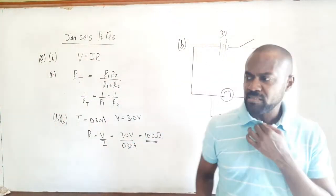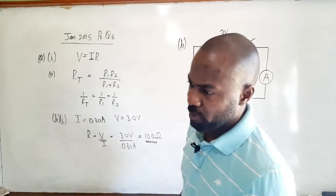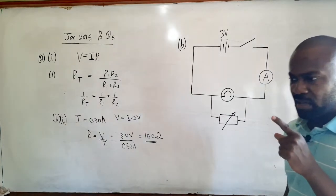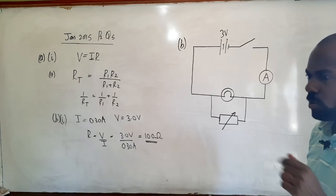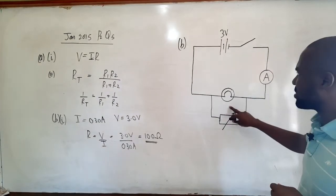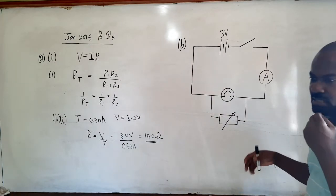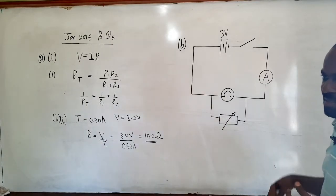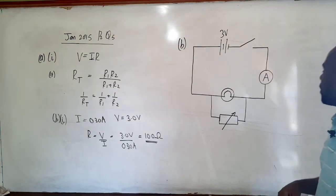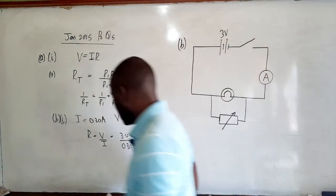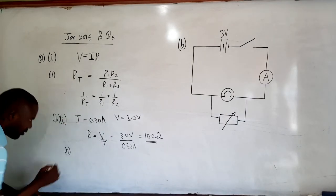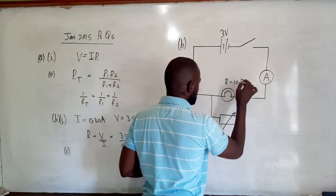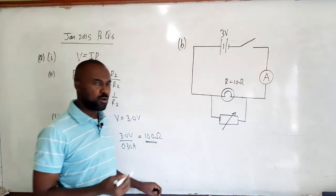Part B2 says: assuming the resistance of the bulb remains constant once lit, calculate the ammeter reading if the rheostat is set to 100 ohms. The rheostat ranges from 0 to 100 ohms, and now they want us to calculate the ammeter reading — basically the current flowing in the circuit — when the rheostat is set to its maximum value of 100 ohms. The bulb has a resistance of 10 ohms.